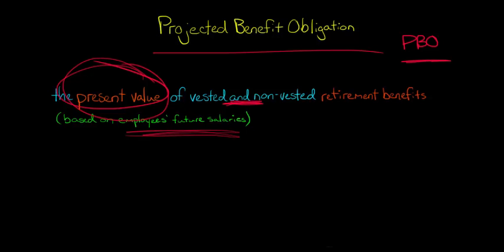I'm going to break this down. Present value basically means we use time value of money to do some discounting. Vested and non-vested means that some of the benefits might not have been earned yet by the employees. For example, an employee might have to work a certain amount of years in order to get this benefit. They might not have done that yet.